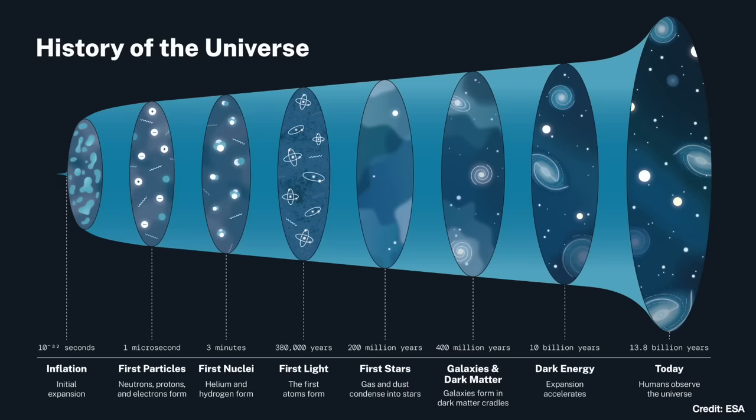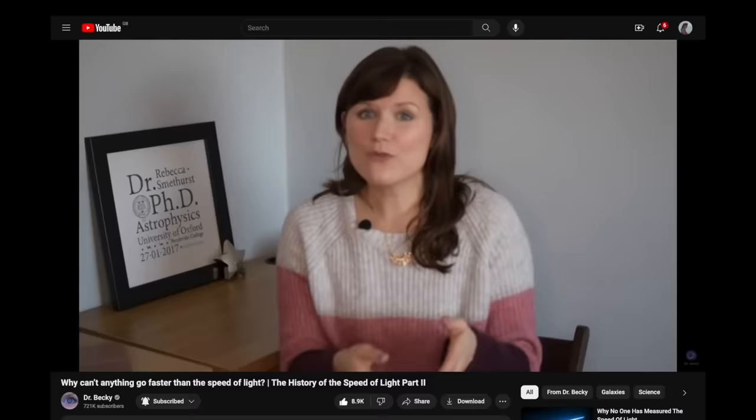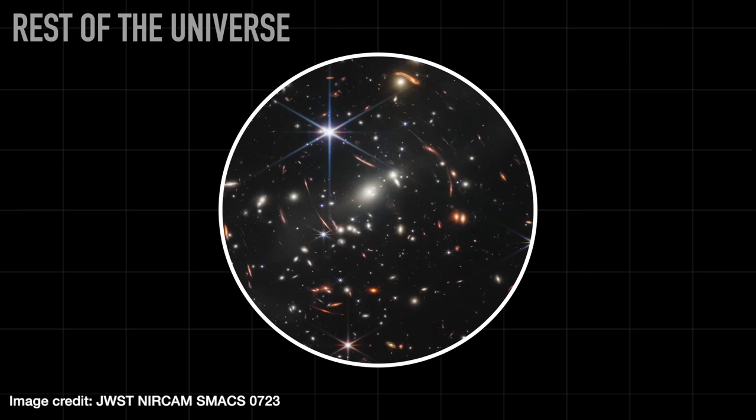That happened when the universe was about 3,000 Kelvin in temperature and about 380,000 years old. It happened everywhere in the universe all at the same time, and that light was sent off in all directions. Now because it takes light time to travel to us — even traveling at the fastest speed there is — there's only so far that we can see out into the universe. This distance is known as our horizon, or the observable universe. It inherits its name from the horizon here on Earth: you can't see beyond it.